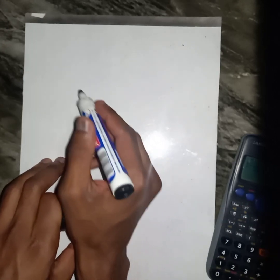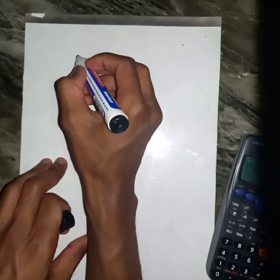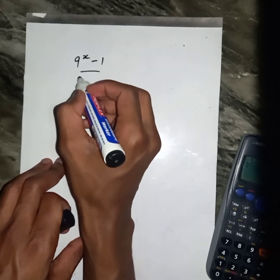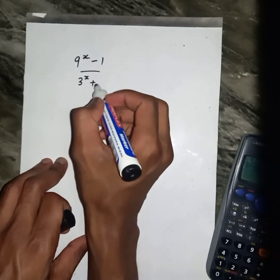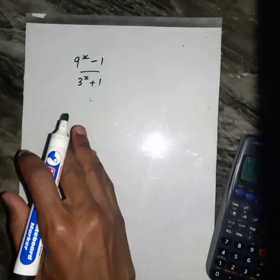Let's say now, if we have something like this, say we have 9^x minus 1 divided by 3^x plus 1. Then I ask you to simplify the following.